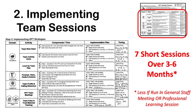If we jump into part two of our planning tool, you can see this is where we plan out how to implement the team sessions. There are seven quick sessions to run over three to six months, and there are advantages if you use general staff meetings or professional learning days — you can really short-circuit this process and build a comprehensive team system.